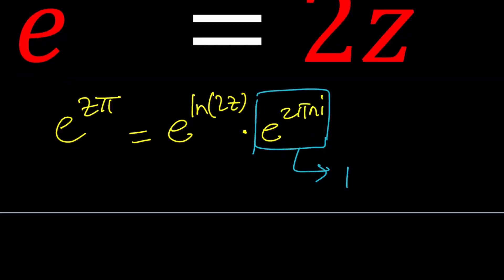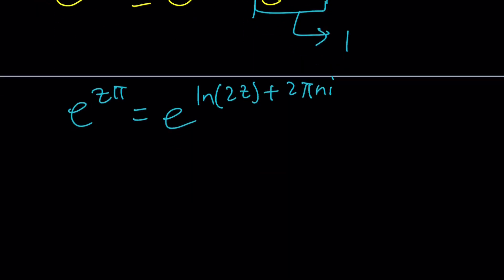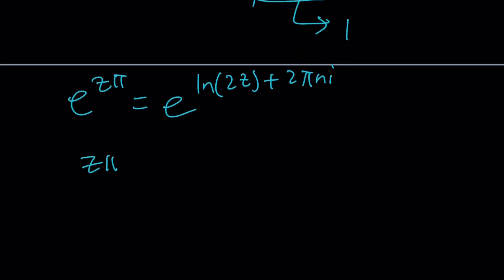Cool. Now when we multiply them, we're going to add the exponents. So that's going to give us an equation, right? Forget about the e's. And now you can write zπ equals ln(2z) plus 2πni. Awesome.